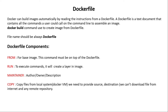There are two options: COPY and ADD, but they have a difference. COPY copies a file from the local system to the Docker VM — we provide source and destination. However, we cannot download any file from the internet or from any remote repository such as a Docker registry or Docker Hub when using COPY.